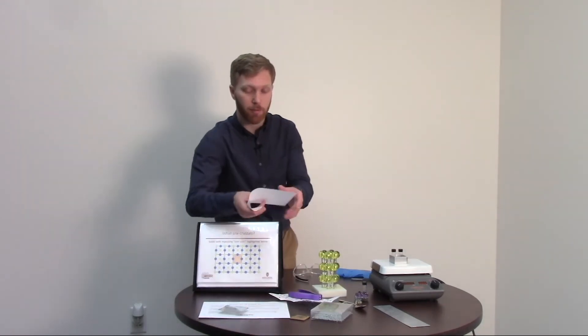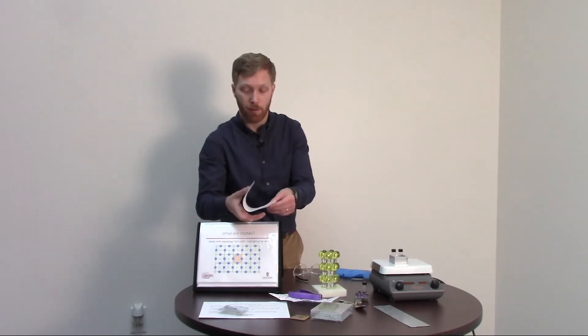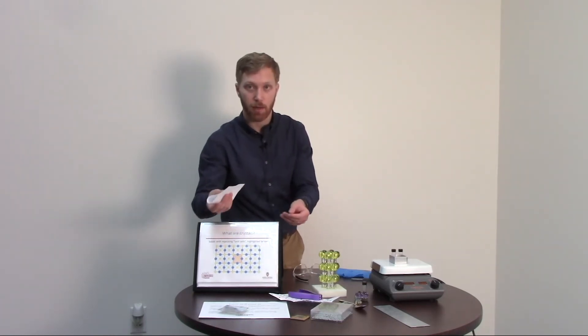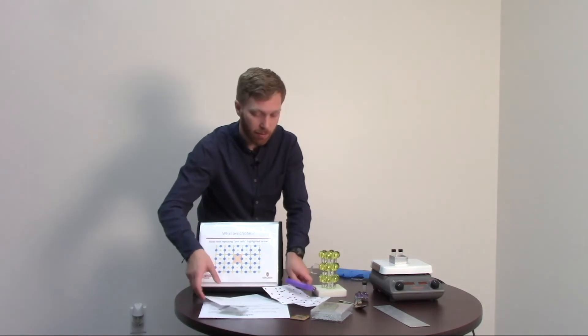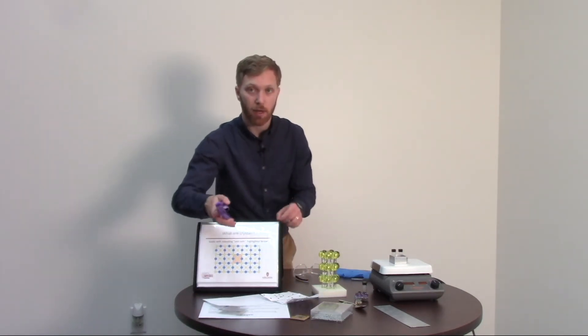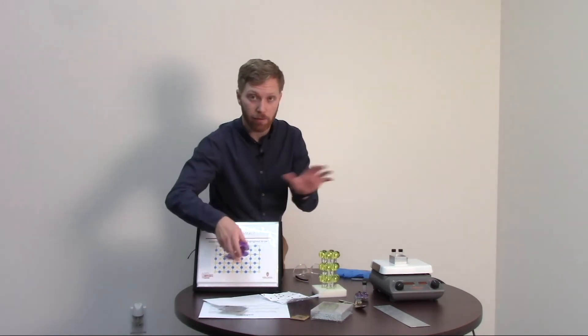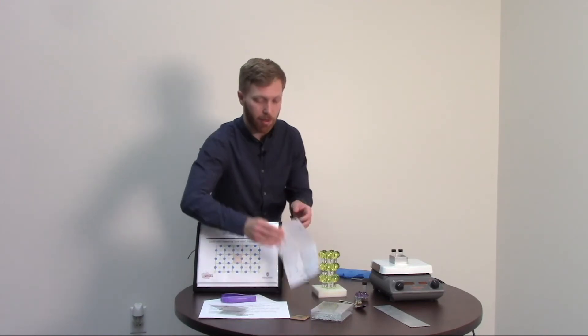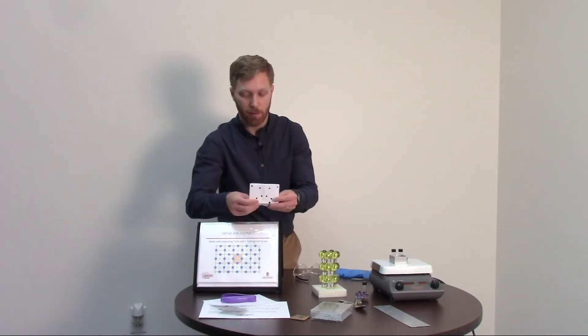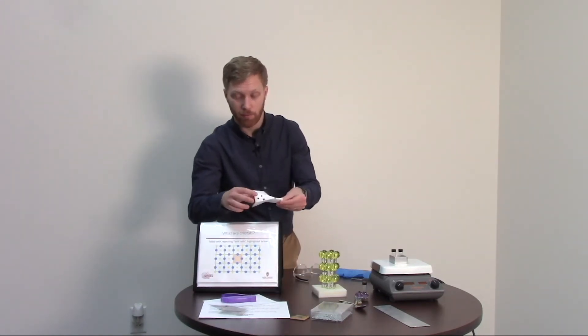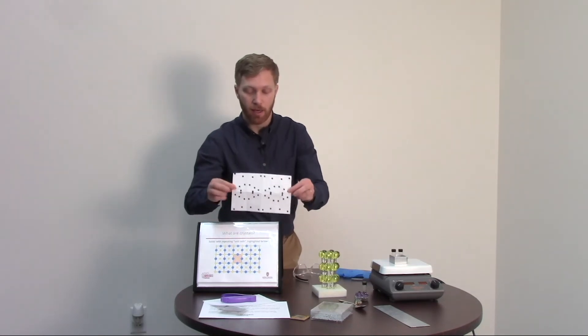Alright, here's what I want you to do. I want you to take this piece of paper and you're going to fold it in half three times. And then once you've done that, you're going to take a hole puncher and I want you to punch five holes in it, however you want. And then once you're finished with that, I'm going to have you unfold it and you'll get a nice little pattern like this. And this is your crystal pattern.